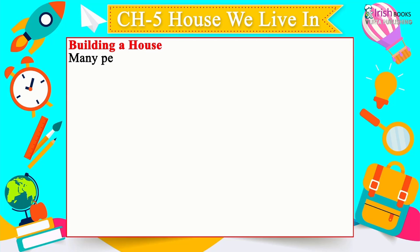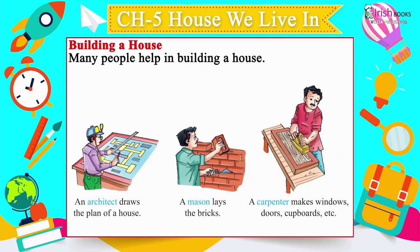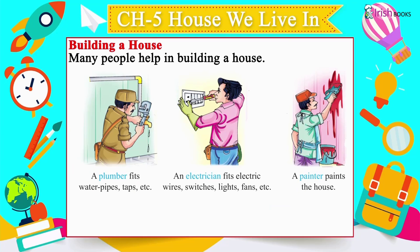Building a House: Many people help build a house. An architect draws the plan; a mason lays the bricks; a carpenter makes windows, doors and cupboards; a plumber fits water pipes and taps; an electrician fits electric wires, switches, lights and fans; a painter paints the house.